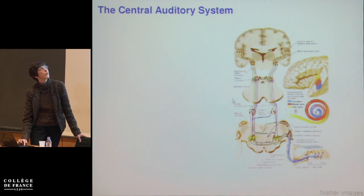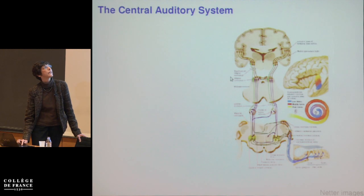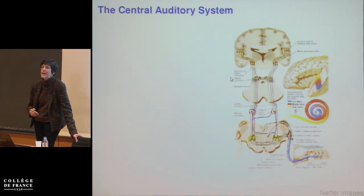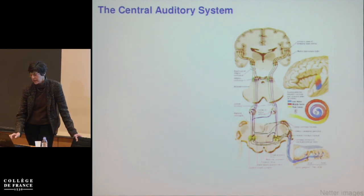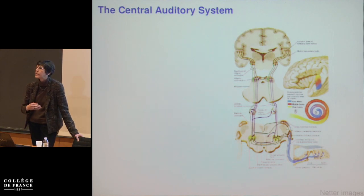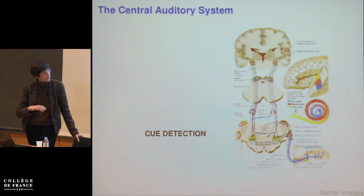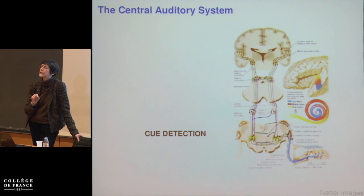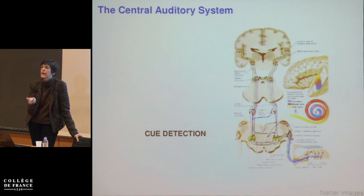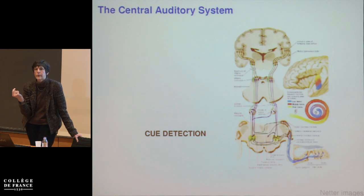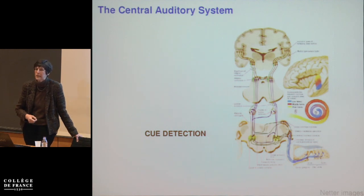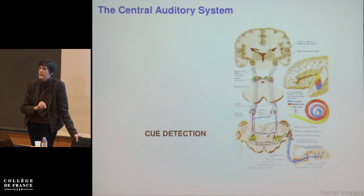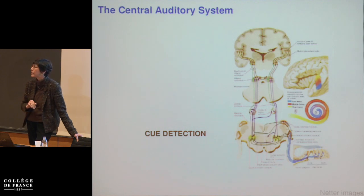The first obvious thing you notice looking at the ascending auditory pathway is that there's a lot going on below the level of the cortex. The brainstem nuclei appear to be doing something best described as cue detection — extracting specific cues such as the difference in sound loudness between the two ears, or onsets across many sound frequencies that might be a cue for a consonant.